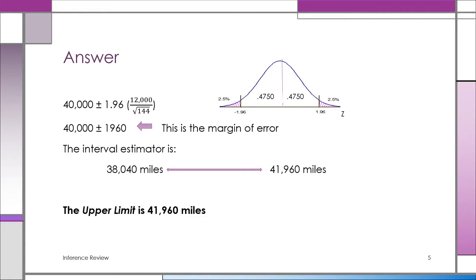Now we plug our numbers into the formula: x-bar is 40,000 ± 1.96 × (s / √n) = 40,000 ± 1.96 × (12,000 / √144). The margin of error — also called the half-width — is 1.96 × (12,000/12) = 1,960. This margin of error is the amount added and subtracted from the sample statistic to form the interval.